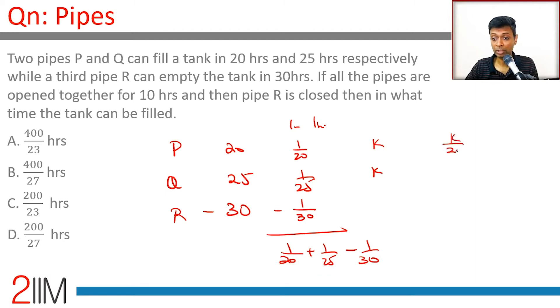Pipe R is kept only for 10 hours. Pipe R would have drained 10/30. The total impact should be 1—the entire tank should have been filled.